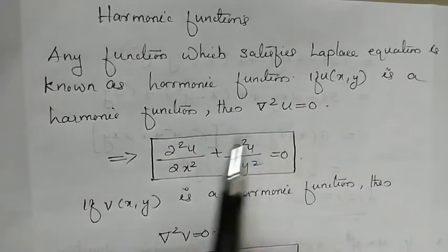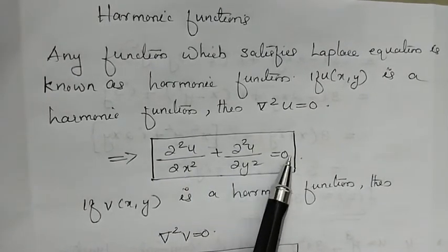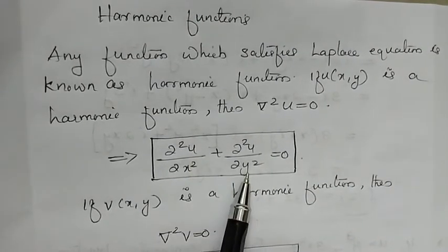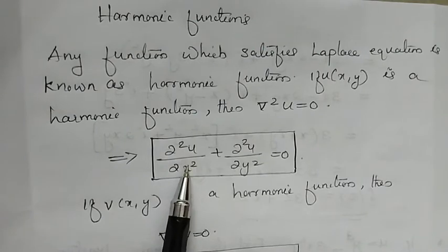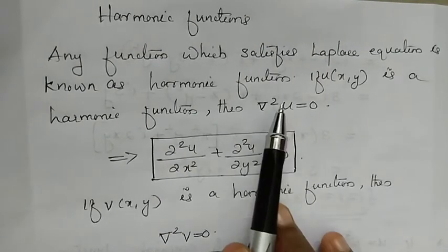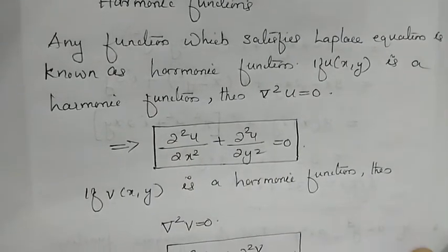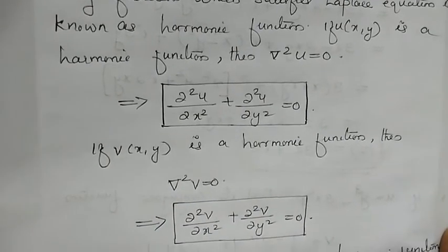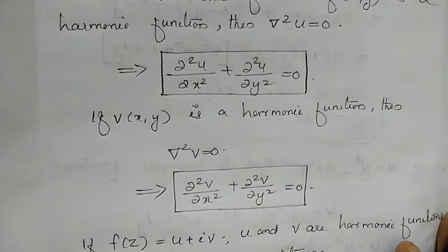∇²u = 0 means ∂²u/∂x² + ∂²u/∂y² = 0. Similarly, if v(x, y) is a harmonic function, then ∇²v = 0, which implies ∂²v/∂x² + ∂²v/∂y² = 0.